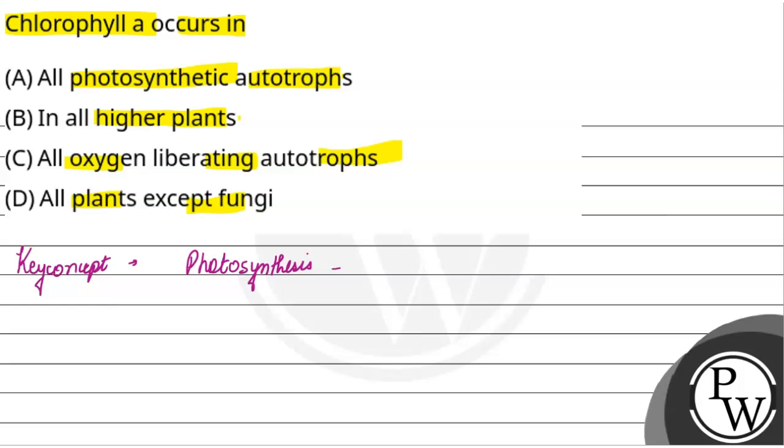Photosynthesis particularly takes place in the green leaves of plants, and even in other green parts like the stem, etc.